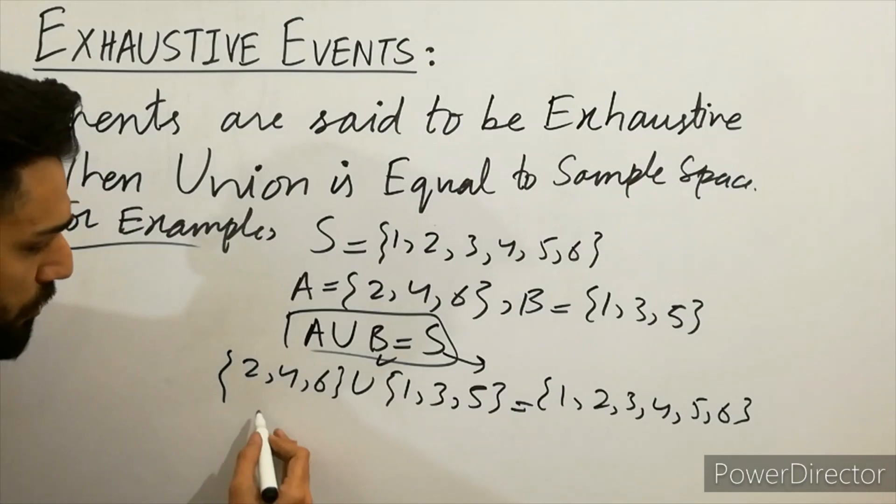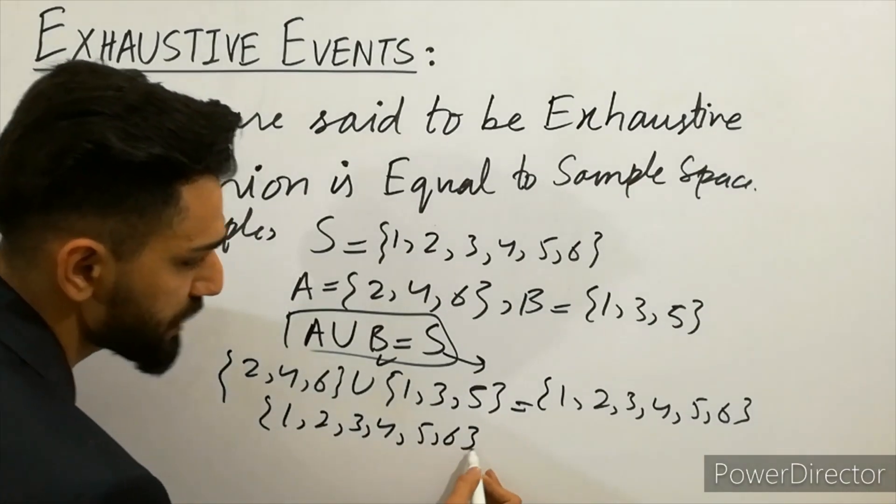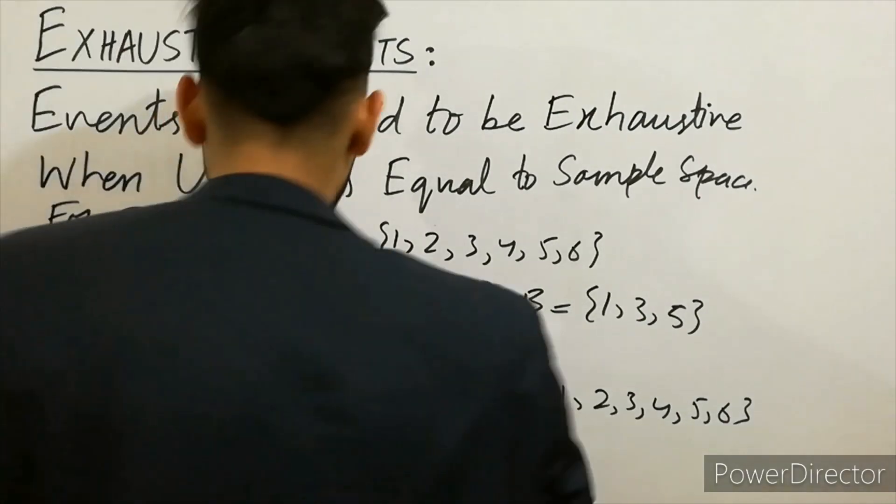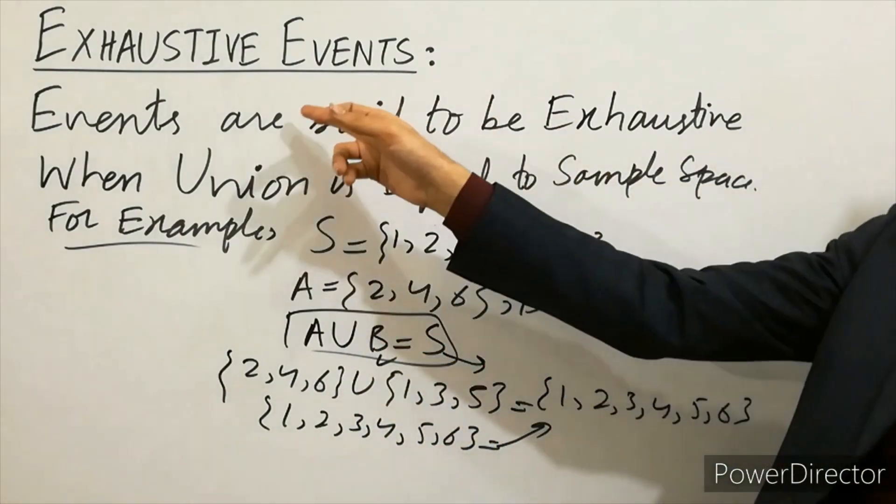Taking union of both sides, you can get here {1, 2, 3, 4, 5, 6} which is equal to this. So those are equal to each other. So we can write here the union of A and B is equal to sample space, that's called as exhaustive events.